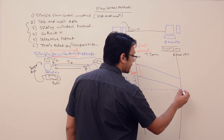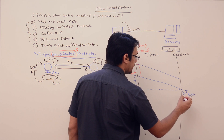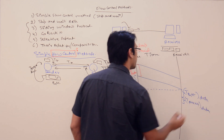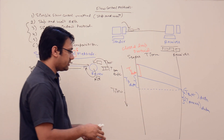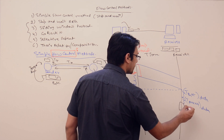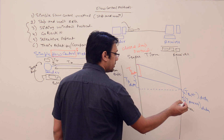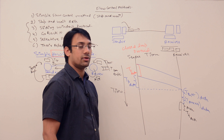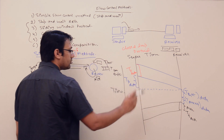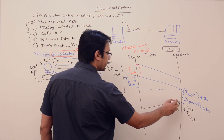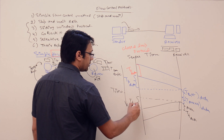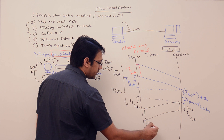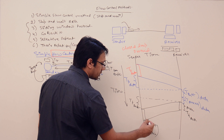The receiver takes the packet, which first waits in the buffer and is then processed. After that, the receiver generates an acknowledgement and places it on the transmission media — the time taken for this is the transmission time of acknowledgement. This acknowledgement then travels from receiver to sender (propagation time of acknowledgement), waits in the sender's buffer, and is processed.